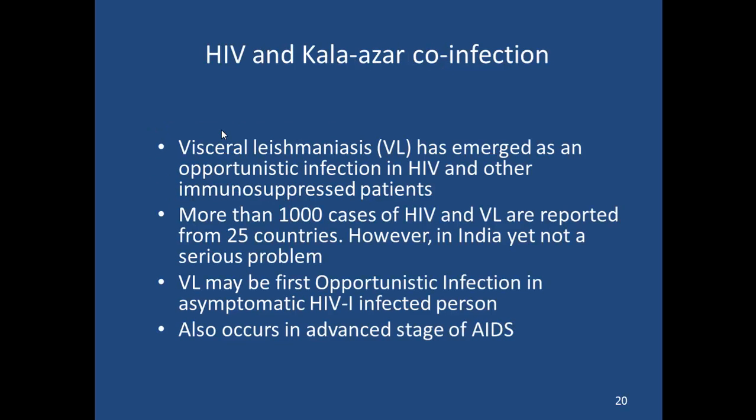There are a lot of connections between HIV and Kala-azar or Leishmaniasis. It's been emerging as one of the major opportunistic infections for HIV-infected people, with more than 1,000 cases of HIV and Leishmaniasis reported from 25 countries. In India it's not yet a serious problem, but because India has such a high amount of Leishmaniasis, if HIV rates start to increase this could become a major problem.